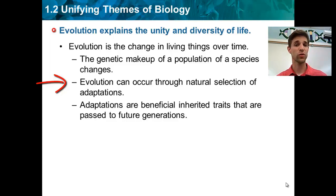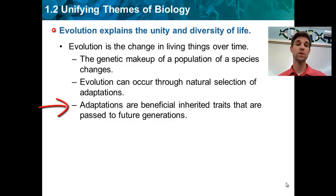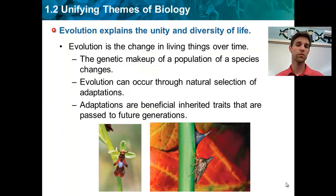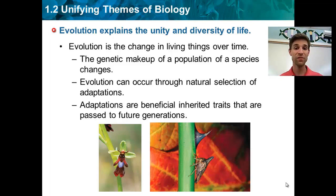Natural selection is going to select for those advantageous traits — we call it survival of the fittest, but we'll talk more about that in our evolution unit. If that adaptation is beneficial and able to be inherited, then after many, many generations, more and more individuals in that population are going to have that advantageous trait. So over generations and really over hundreds of thousands or even millions of years, species can actually change because they acquire these new adaptations over long periods of time. It's important because evolution explains not only the unity — the fact that we all share characteristics and that all species on Earth are related through evolution — but it also explains the diversity of species we see here on Earth, and how every single one of the millions of species on Earth are actually related to each other and share a lot of characteristics.